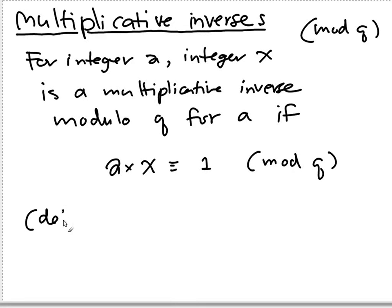So we denote x as a minus 1. This is like in reals when you write 1 over x, we write x minus 1 when we do that with the real numbers. So it's the same thing, a to the minus 1.